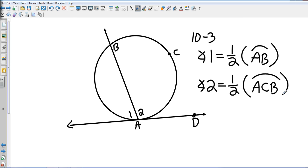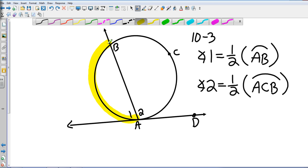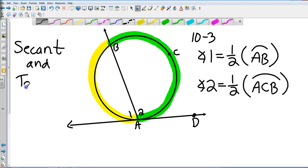Again, order is important, so let's get some color code on this. Angle 1 is going to be half of that measure and then angle 2 is going to be half of that measure, and that's when we have a secant and a tangent. Let's move on to the next one.